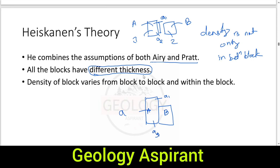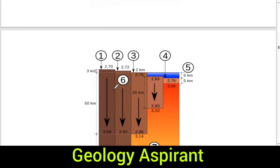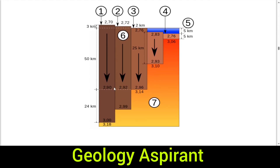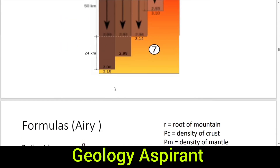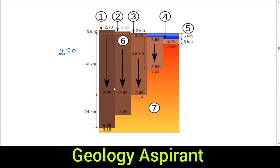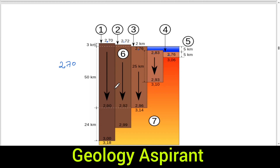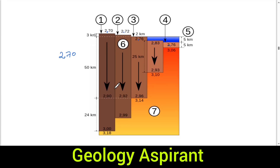So if rock A has density a1 at one point and a2 at another, and rock B has density b1 and b2, then a1 is not equal to b2, meaning density varies both block to block and within each block. In the diagram, each block has a different density shown, and within each block the density also changes. That is enough for today — in the next lecture we will see the relevant formulas. Thank you for watching.